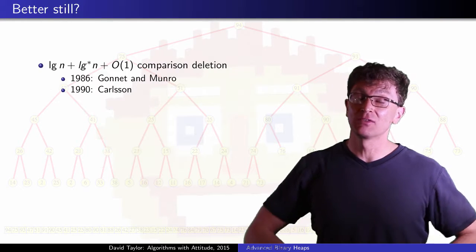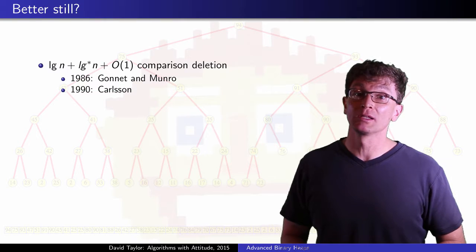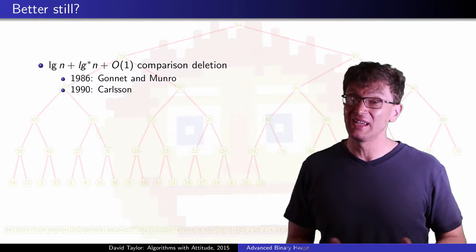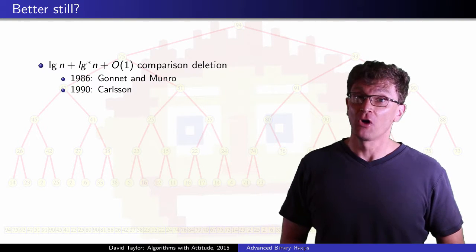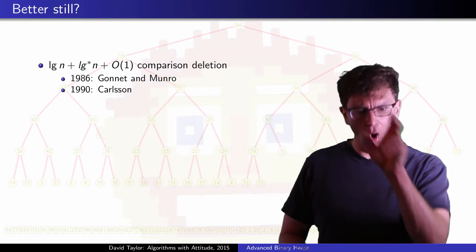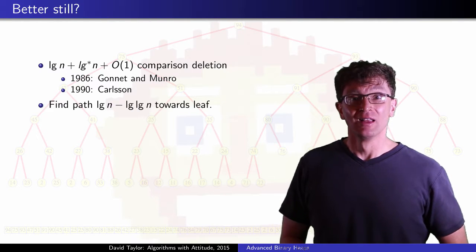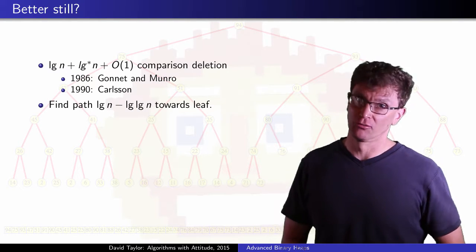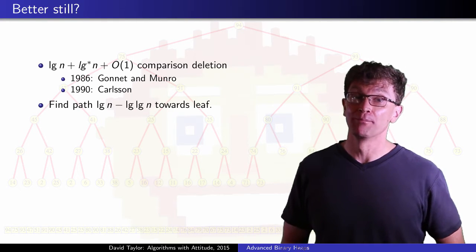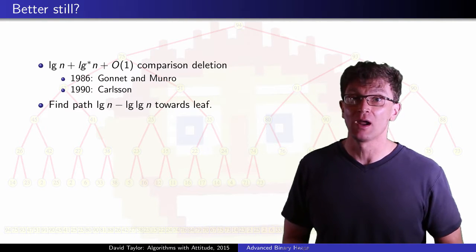We can actually make this even a little bit better, if we're willing to pay a bit more complexity in our code. First, instead of going all the way down to the leaf, just find the path most of the way down to the leaf. Stop log log n away from the bottom of the tree, and check the value there.